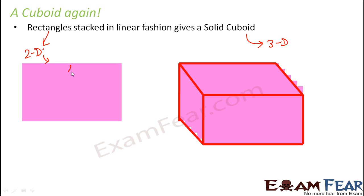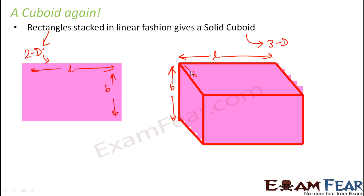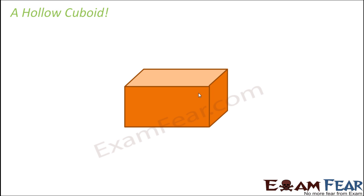Here you only had length and breadth, so it was a two-dimensional figure. But since you kept stacking one rectangle after another, you got the third dimension. Length was already there, breadth was already there, and height has come as the additional third dimension added by stacking the rectangles one above another. That was an example of a solid cuboid — not hollow from inside — where so many rectangles form the cuboid.